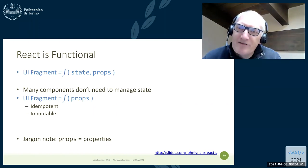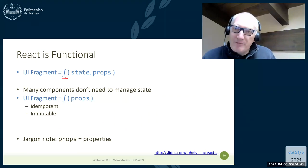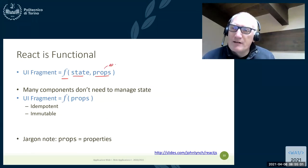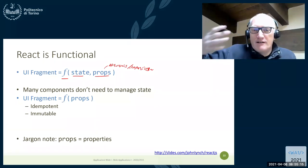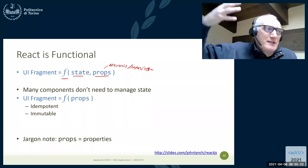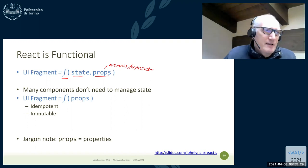A given part of the page is computed by a function that we define — these are the components. A component depends on two different types of variables. One type is called properties or arguments, which are inputs from the outside — for example, the color in which to render a list of filters. The second type is the real state parameters — the current values in the application inside the component.